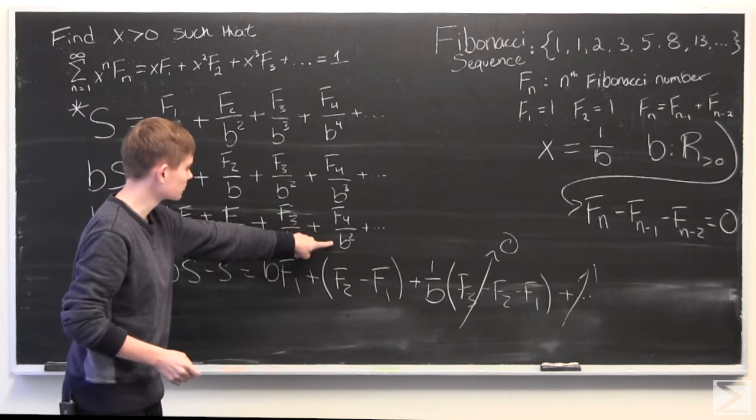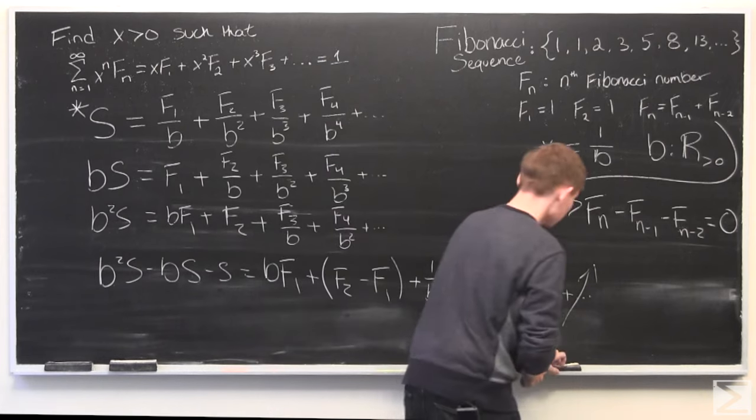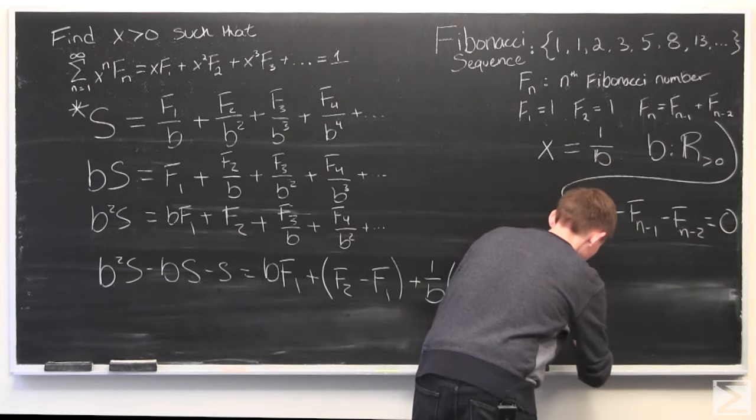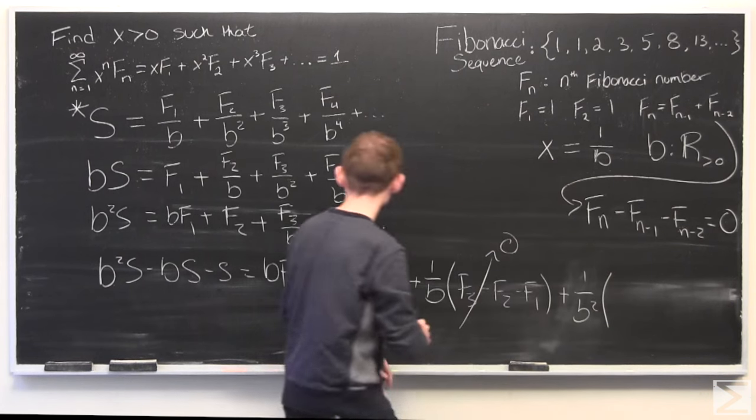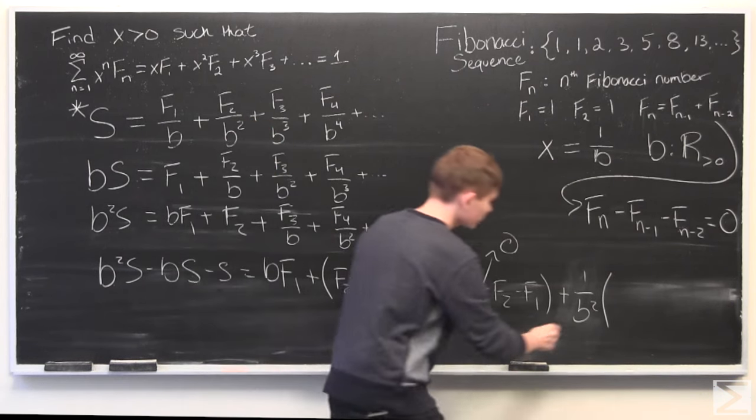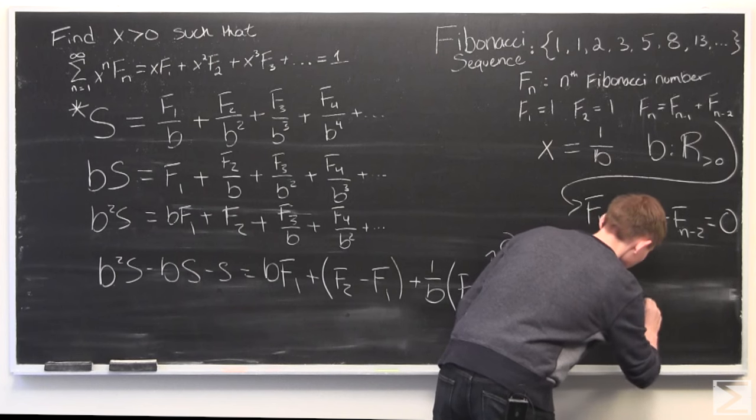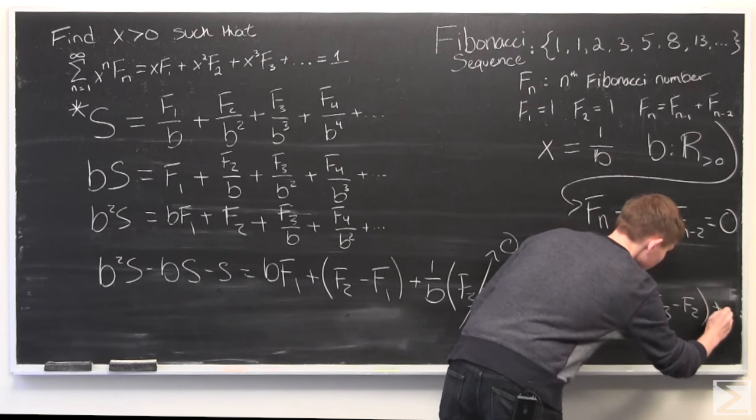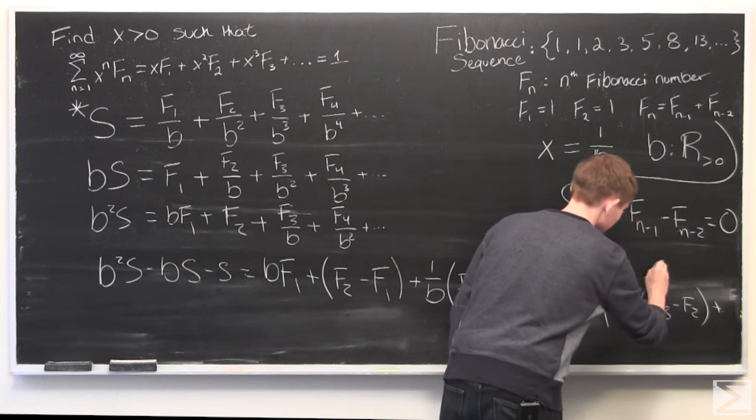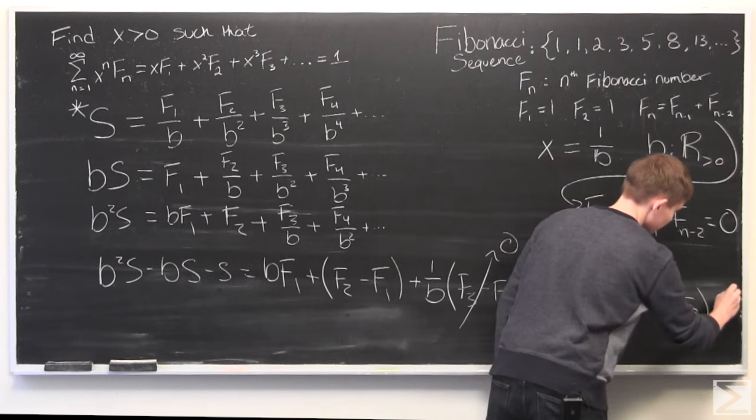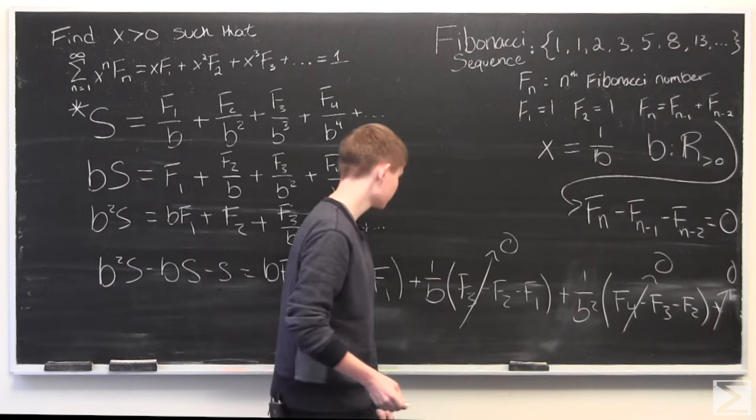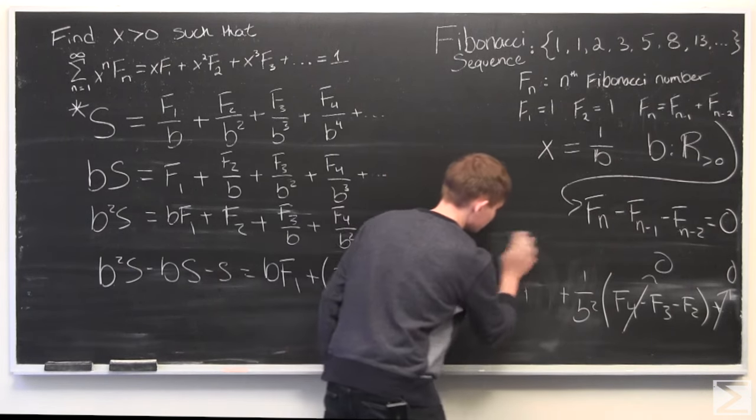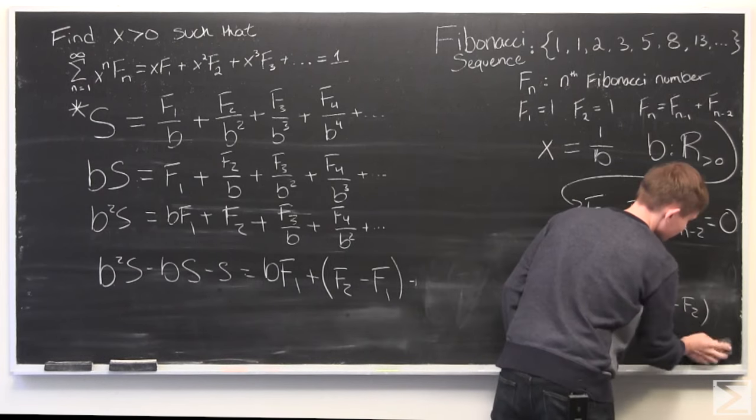So, let me just write this out real quick. The next one would be 1 over b squared, f4 minus f3 minus f2, which would also be 0, and the same with the rest of them. So, we can simplify this and get rid of all of the rest.